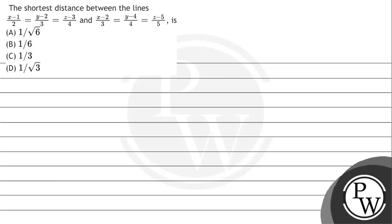Hello bacho, let's read the equation. The equation says that the shortest distance between lines (x-1)/2 = (y-2)/3 = (z-3)/4 and (x-2)/3 = (y-4)/4 = (z-5)/5 is — options A, B, C, D are given.